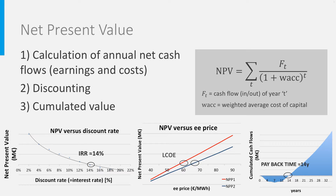The discount rate is the cost of capital that represents the remuneration rate required by investors. It reflects the risk perception by investors. When future cash flows are less certain, investors ask for a higher remuneration rate. The project risk increases with longer payback times.